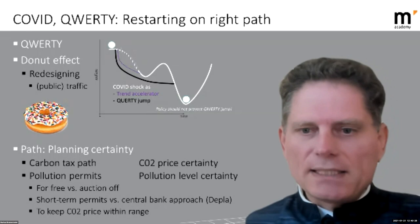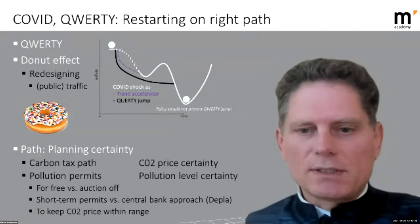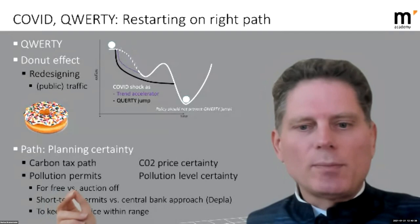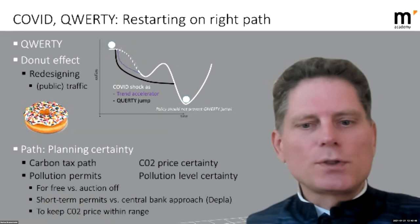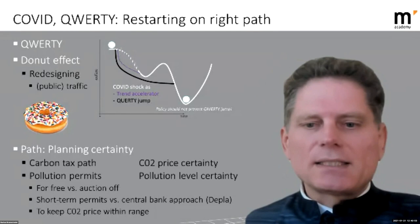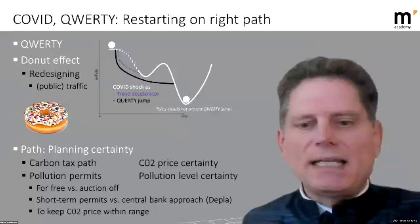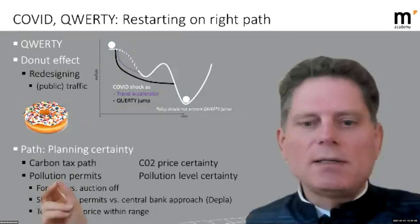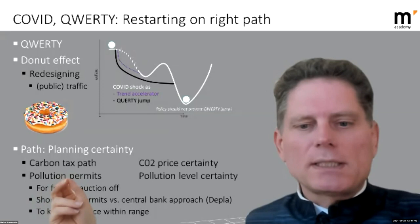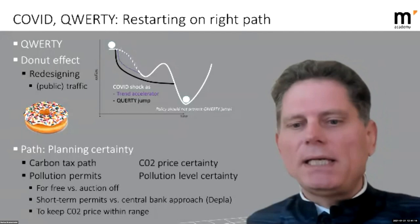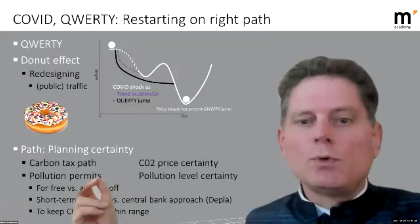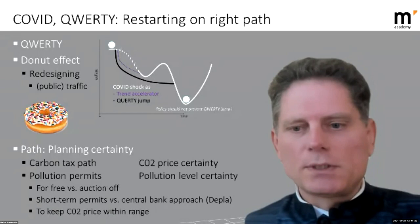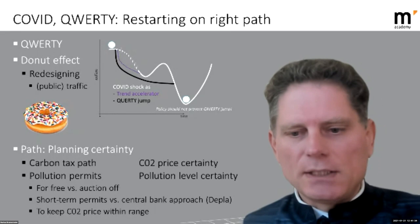The trade-off is whether individuals need planning certainty about the prices they face, or whether society needs more certainty about pollution levels. With pollution permits, there's also the question of whether to give them away for free — as many European industries received — or to auction them off, which is a redistributional issue. A central bank-like authority could also buy and sell permits to smooth out price volatility, providing some planning certainty for private entities.